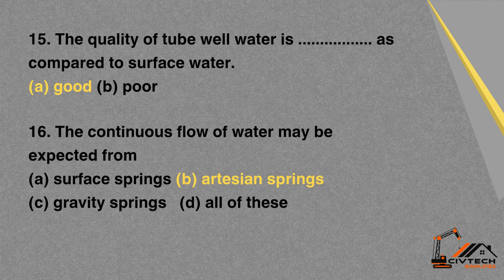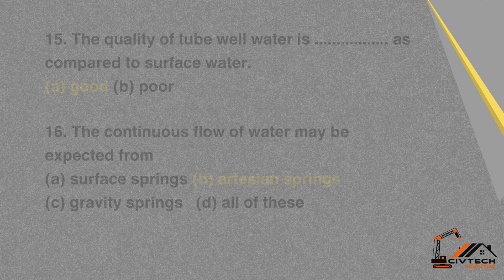MCQ 16: The continuous flow of water may be expected from — A. Surface springs. B. Artesian springs. C. Gravity springs. D. All of these. Correct option: B. Artesian springs.